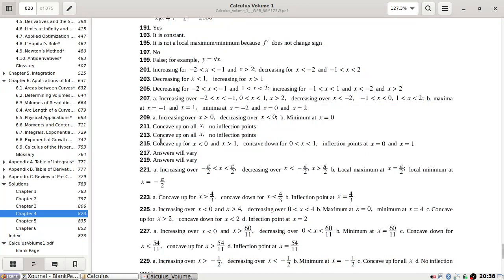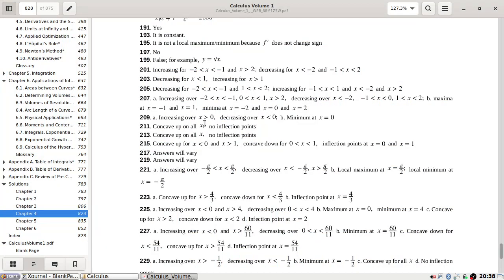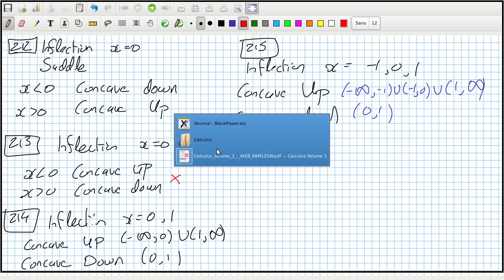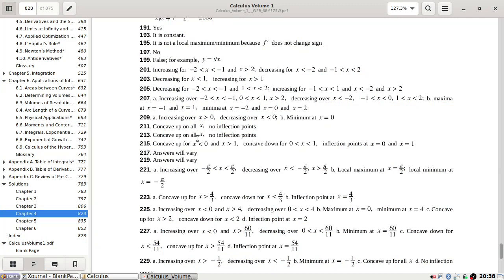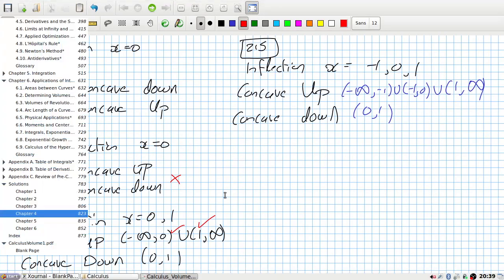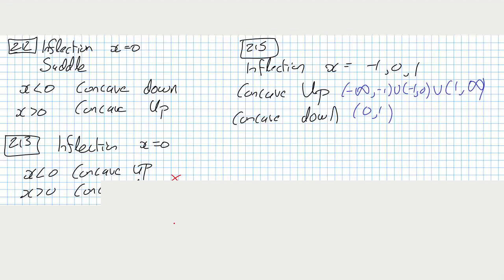And concave up on all x. No inflection points. Concave up for x less than zero. Concave up. Concave up for x less than zero and x more than one. And then concave down between zero and one. Inflections at zero and one.